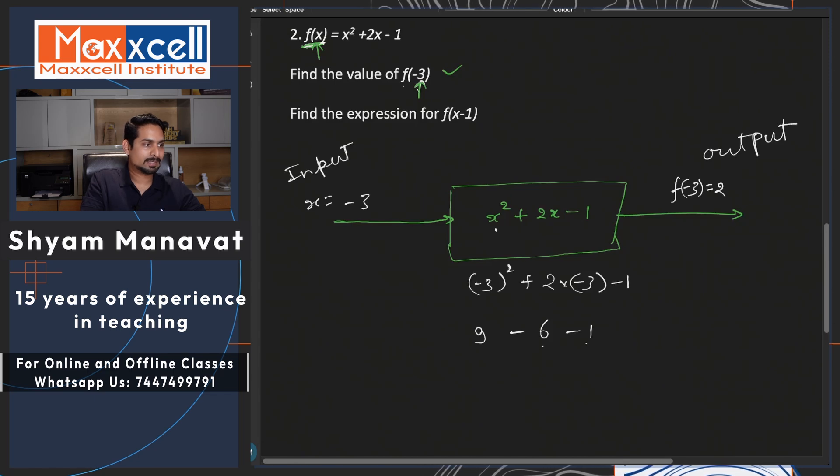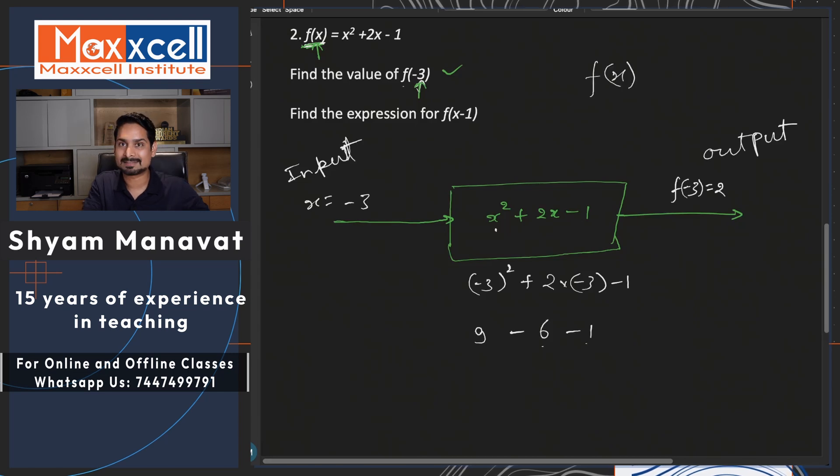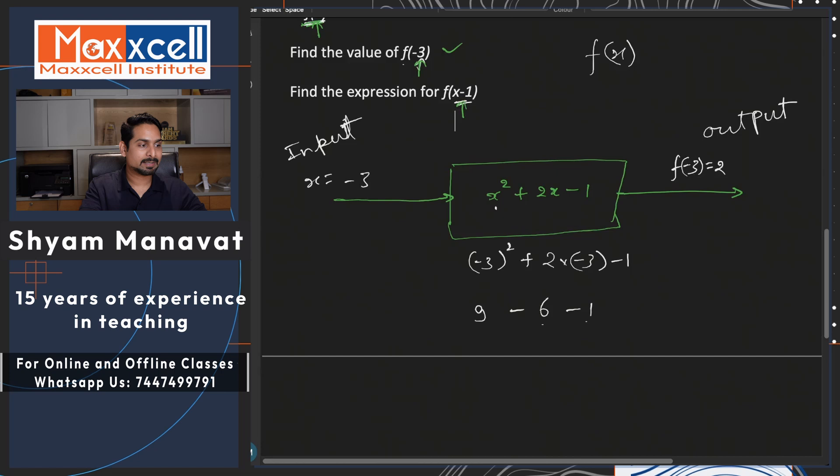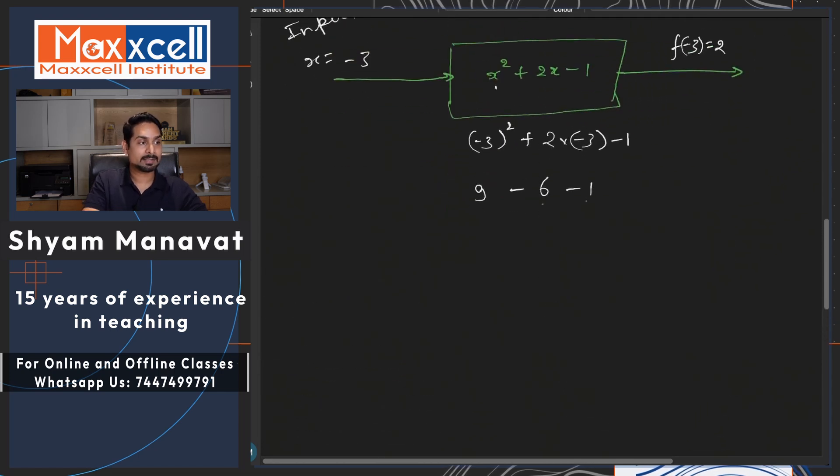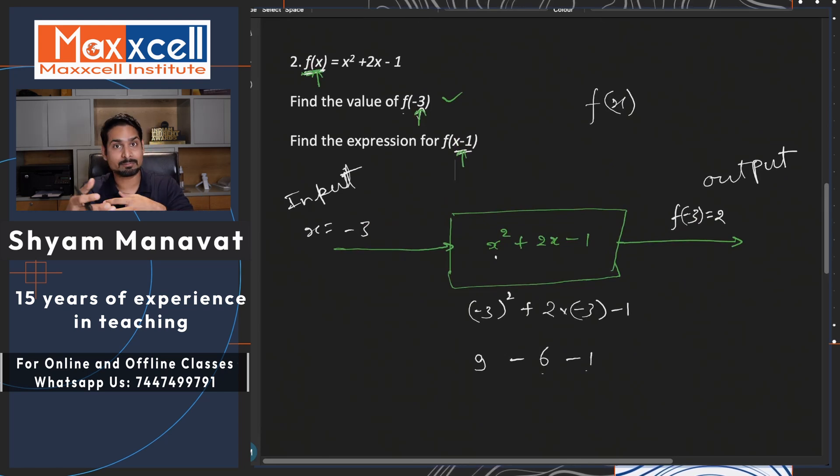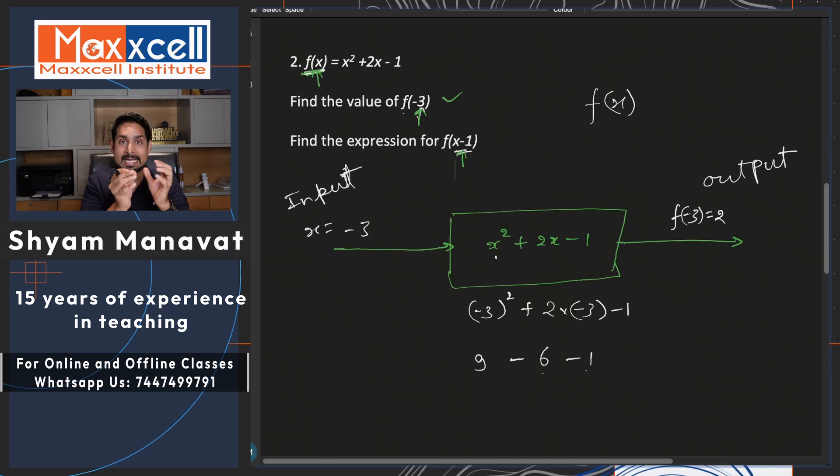So I hope you will not get scared with this symbol anymore, f(x), g(x), h(x) functions which has input and output. You want to find out the expression for f of x minus 1. What are they trying to say? Instead of x, if you substitute x minus 1, then what should be the output? So obviously, the output will be in form of variable itself, because you are substituting another expression at the place of x.